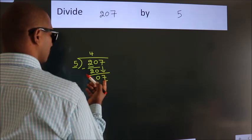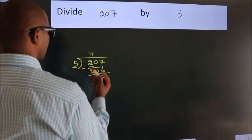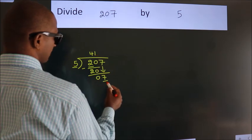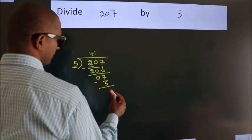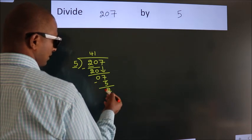A number close to 7 in 5 table is 5 once 5. Now we subtract. We get 2.